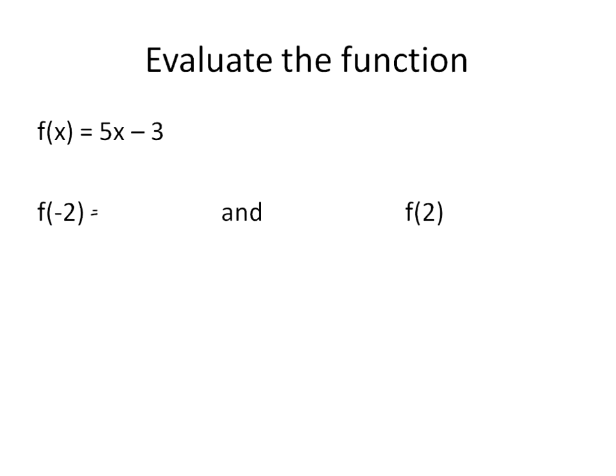We'll write out that that's 5 times negative 2 minus 3. So again, my function at the point negative 2 is equal to negative 10 minus 3. My function solution is negative 13. So that means, again, when x is equal to negative 2, my output, or my y value would be negative 13.